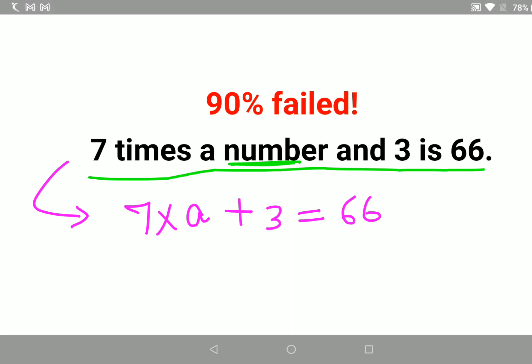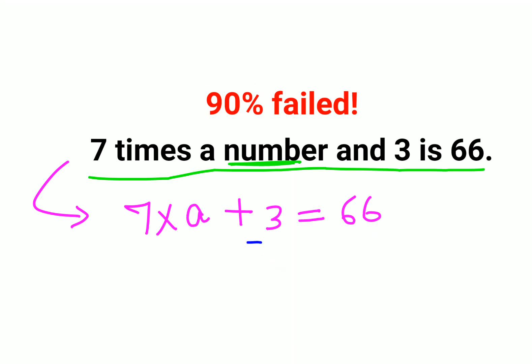Next, in order to find the value of A, you will subtract both sides by 3. So you have 7A equals 63.